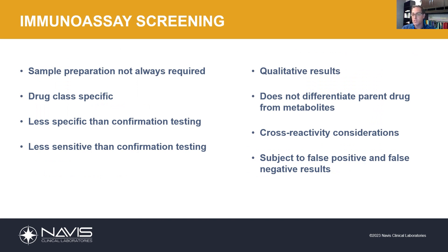These tests are generally speaking less specific than confirmatory testing. What we mean by that is these are drug class determinations. We're determining whether or not an opioid is present or a benzodiazepine is present. We don't necessarily know which specific drug within that class is in our sample, but we know there's a drug present of that class. That's what we mean by specificity.